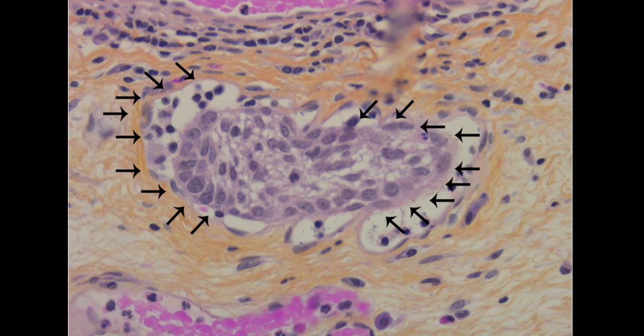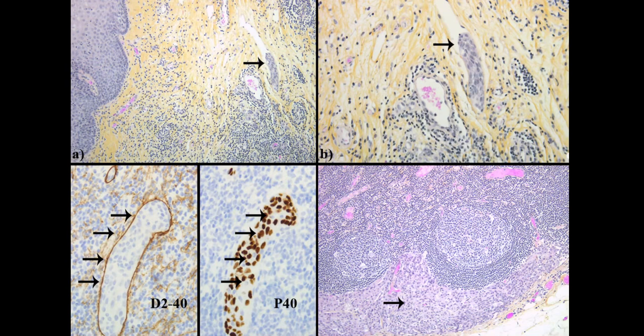Due to the high-risk features, the patient went on to receive an esophagectomy. Here we can see the esophagectomy specimen. In panels A and B, we see the proximal resection margin with lymphovascular invasion by the squamous cell carcinoma. In panel C, using the D240 stain, the lymphatic space is highlighted.